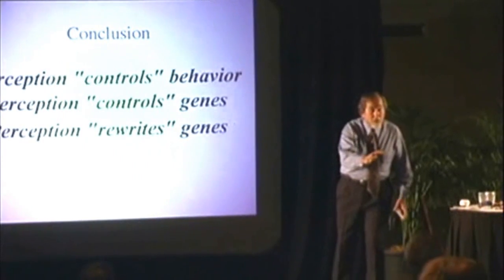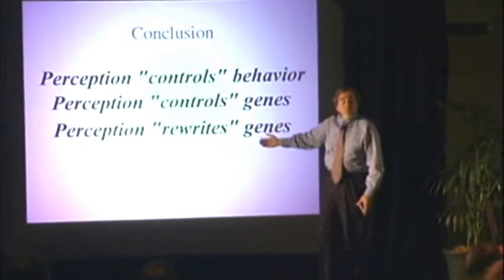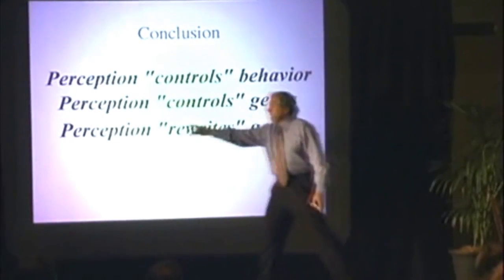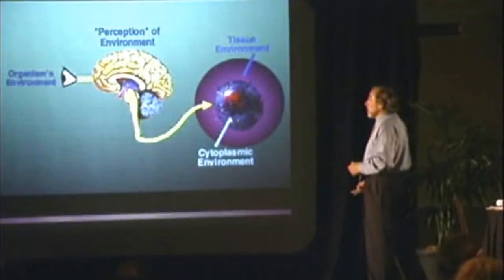If you understand what this means, then how you see things and how you believe things are going on becomes important. If you think your behavior, the selection of your genes, or the rewriting of your genes is important, the answer is yes — because all of these are connected to belief. Perception in humans is related to belief. You have the ability to change anything in your body, but if you got here healthy and you change it, that usually means you're making it less effective.